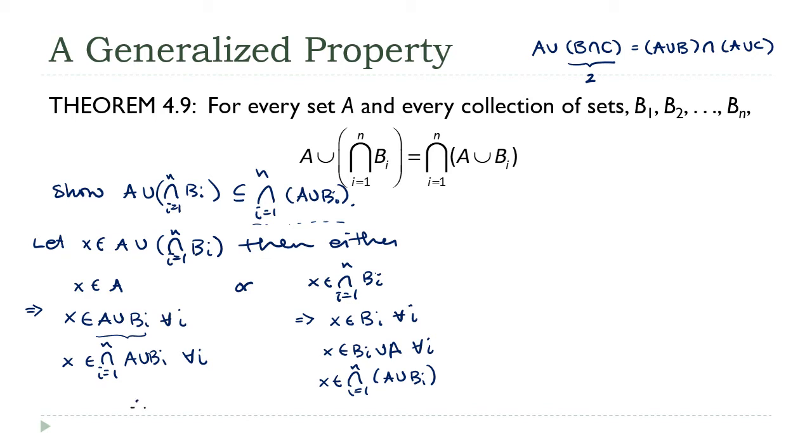Therefore, A union the intersection of the B sub I is a subset of the intersection of the union.